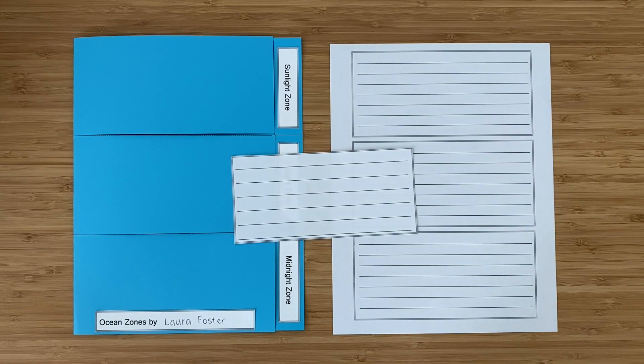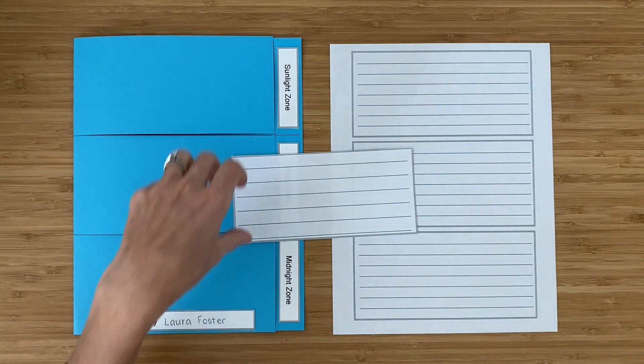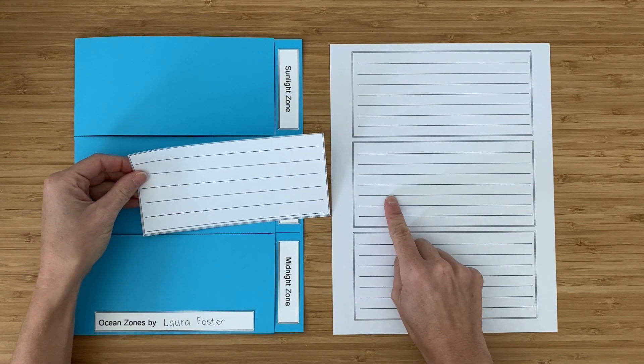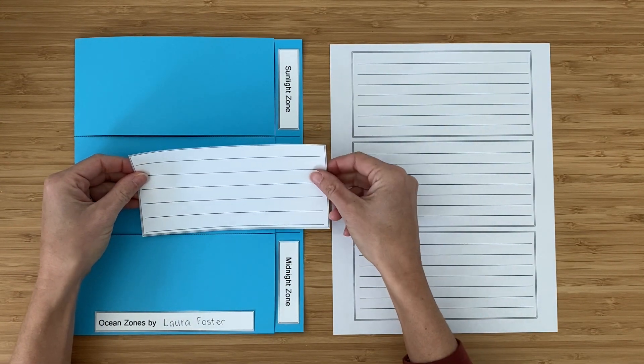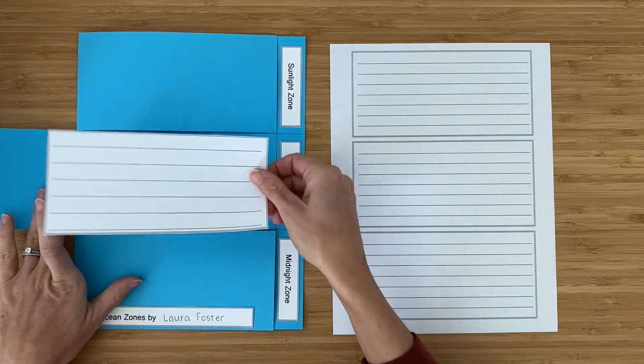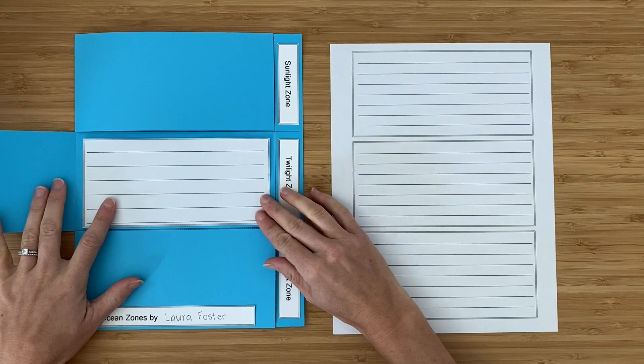Now it gets fun. It's time for children to research the different zones. They might find out the depth of those zones, how much sunlight is in the zone, what type of animals live there. They can look up information on computers or in books and write down their research on these research pages I've included. These lines are closer together and these are further apart. When they're finished, they can cut them out, open the correct flap and glue it right in place.